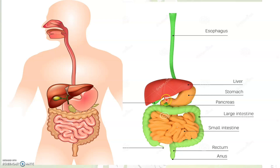From the stomach, food then goes into the small intestine. The small intestine also digests the food with the help of intestinal juices that are produced by the liver and also the pancreas. Digestion process completes in the small intestine. Liver produces bile, which helps to digest fat, while the pancreas produces intestinal juices which help to digest fats, proteins and carbohydrates.